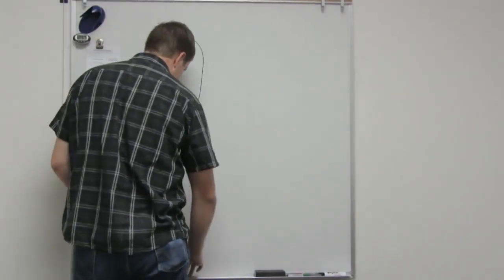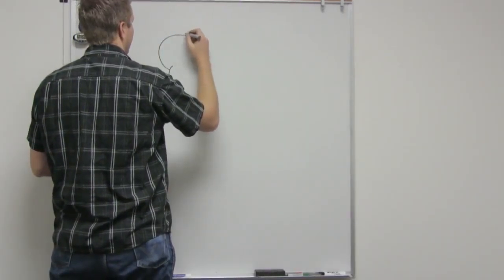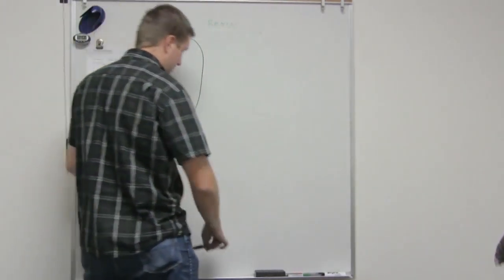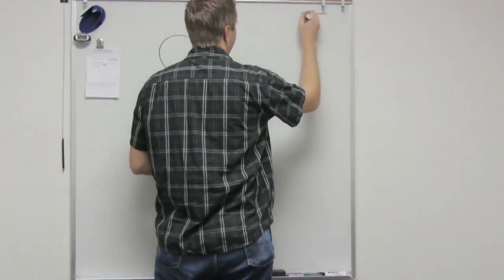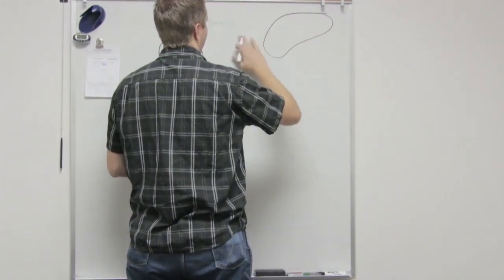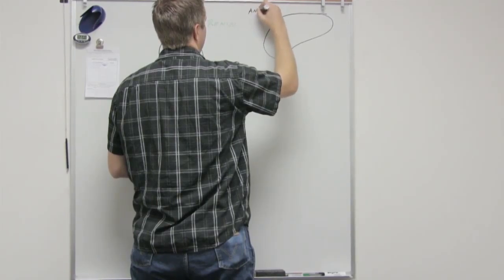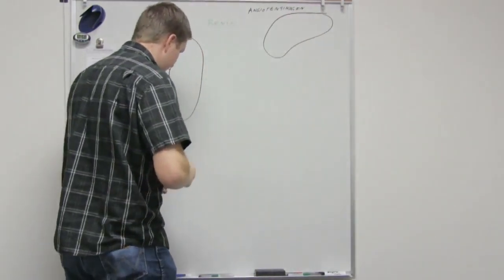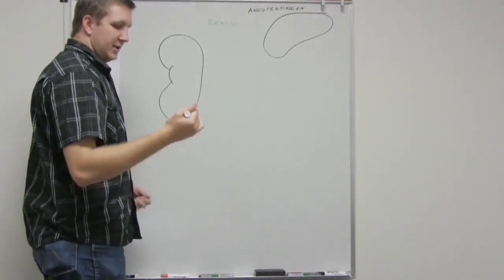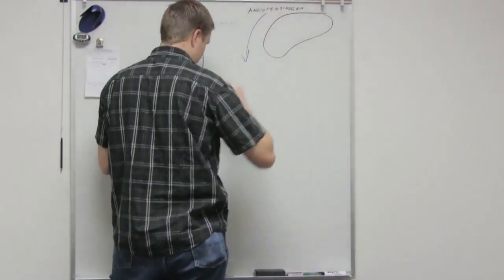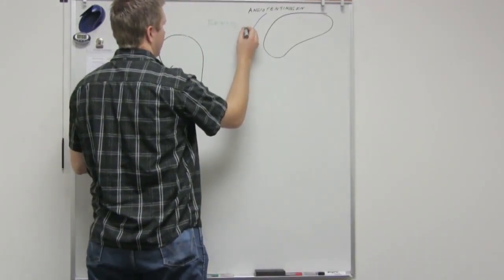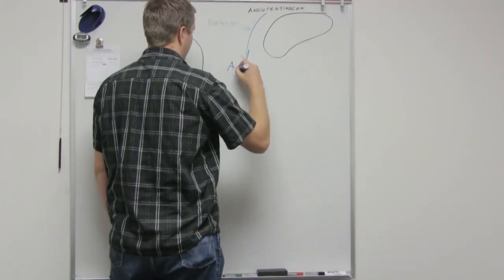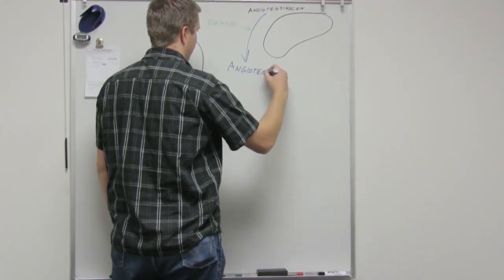So it is going to secrete renin. Renin is an enzyme. So renin, over here in the liver we have, liver is constantly producing angiotensinogen, which is another enzyme. So angiotensinogen gets converted by renin, so renin converts angiotensinogen into angiotensin one.